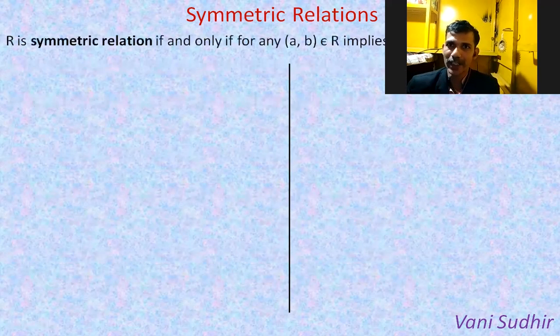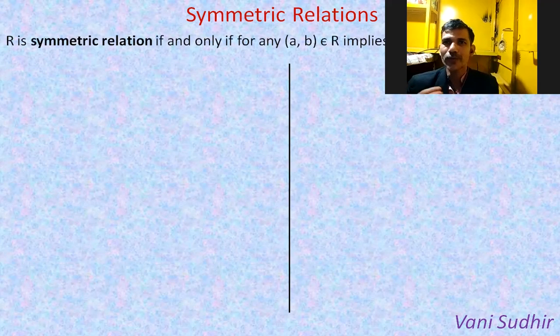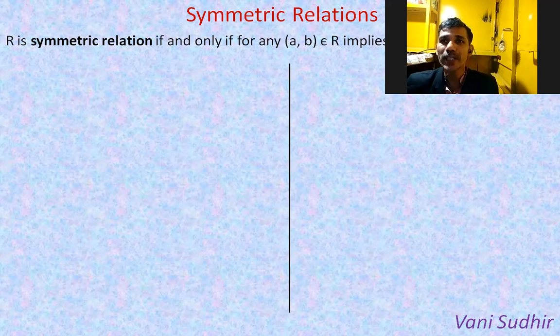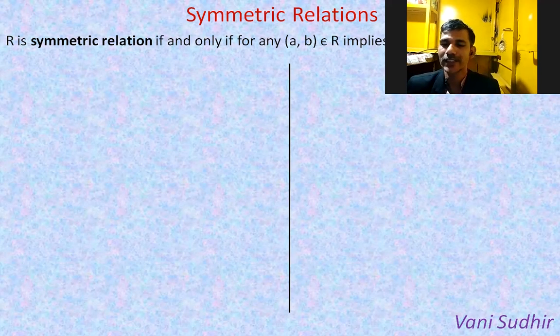R is said to be a symmetric relation if and only if for any (A, B) belonging to R, (B, A) is also there in R. Then only it is a symmetric relation.